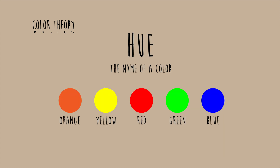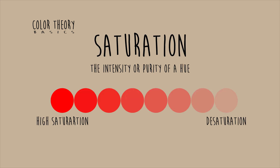Next we have hue in color theory. Hue is the name of the color — you can see the names of the colors underneath. Then you have saturation, which is the intensity or purity of a hue.